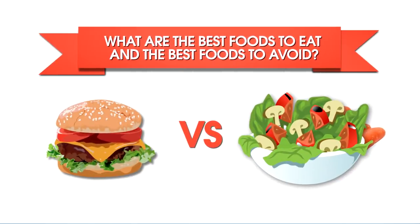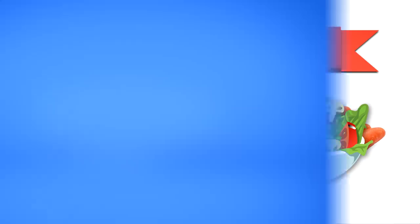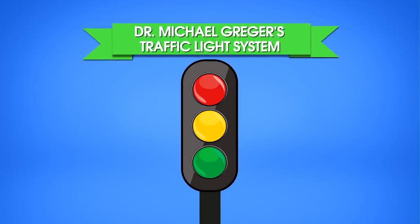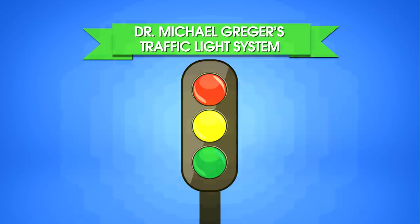Here's how I like to think of it. This is my traffic light system to help quickly identify some of the healthiest options. Green means go, yellow means caution, and red means stop and think before you put it into your mouth.